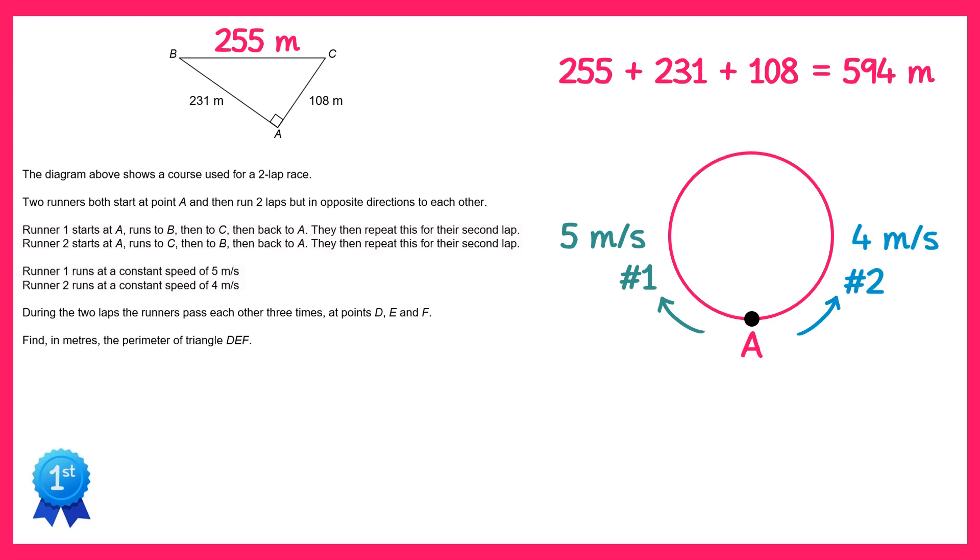Now by the time they meet each other they will have completed one loop combined. But since runner number one runs at 5 metres per second and runner two runs at 4 metres per second, once they've completed one lap combined runner number one will have done 5 ninths of the distance. So if we imagine that runner number one goes around 5 ninths of a loop and runner number two does 4 ninths of a loop, we end up with a situation like this.